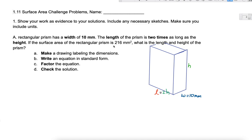And the length is 2 times as long as the height. So we know that the length is whatever the height is times 2. Let's see what else we have. The surface area is 216 millimeters squared. So I have surface area is 216 millimeters squared. I know my width is 10 millimeters. That's a fixed value that we know.